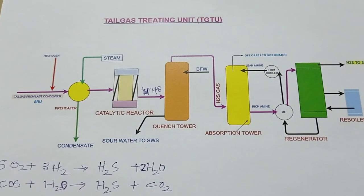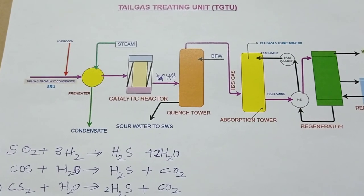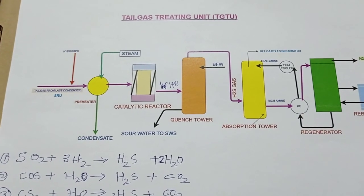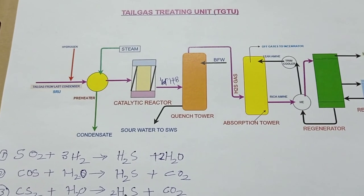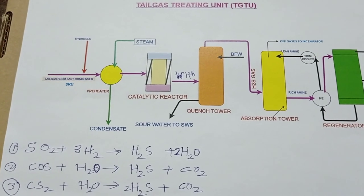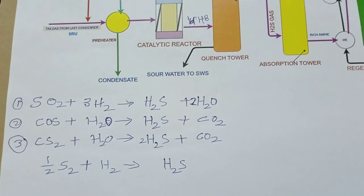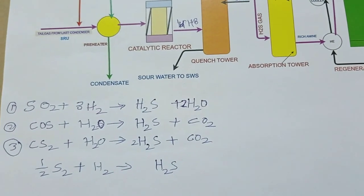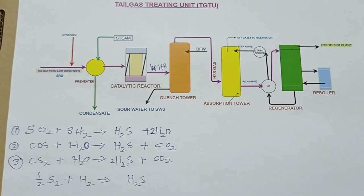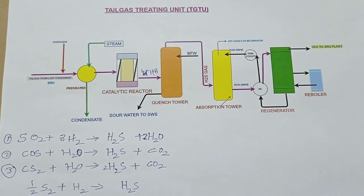This is about the tail gas treating unit, which comes after SRU. In another video soon I will post SRU Part 3, which will cover sulfur granulation, and Part 4 will cover sulfur handling, storage, how sulfur reacts with different components, and a comparison of granulation versus liquid sulfur storage. This is the continuation of the SRU process series. If you have any doubts, please comment below. Thank you.